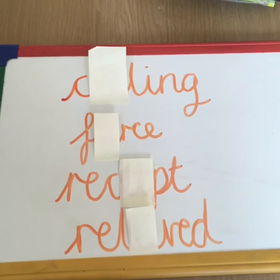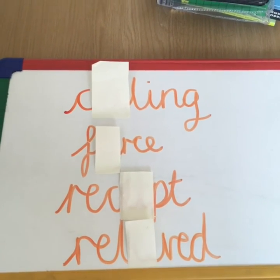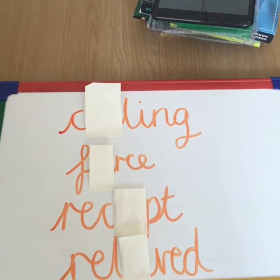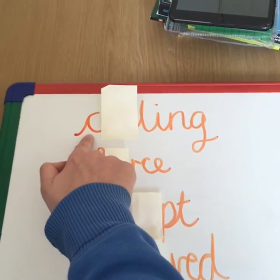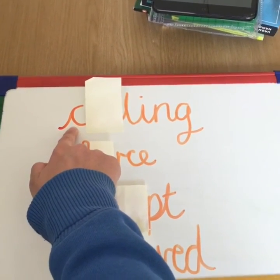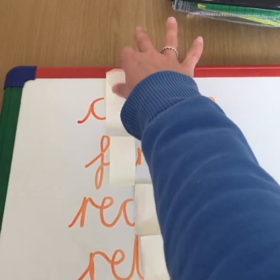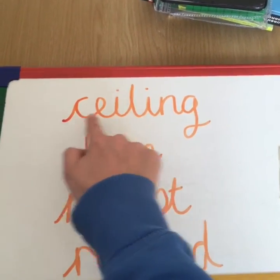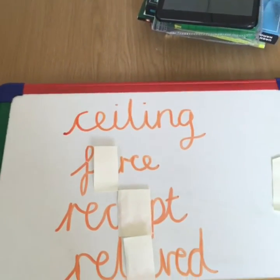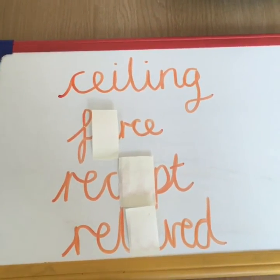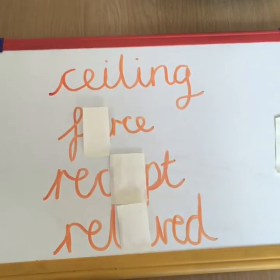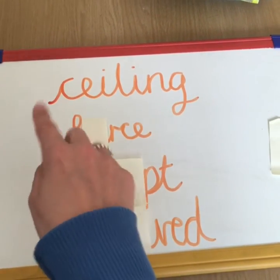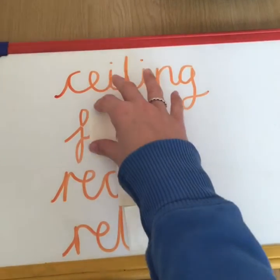Let's see if we can work out if these should be IE or EI. The first word is ceiling — like I can touch the ceiling if I jump. It's I before E except after C, and ceiling starts with a C making that S sound, so it should be EI. Next one is fierce. If you are fierce you might be a bit scary or angry. The E sound comes after an F, so it is I before E — fierce is IE.